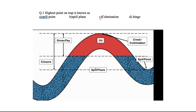The lowest point is called the Spill Plane, and on this Spill Plane we have the Spill Point. The line joining the Spill Points is called the Spill Plane. In an anticlinal trap, the region where we have economical deposits is called the Closure Plane, and the distance between the Culmination Plane and Spill Plane is called Closure. So the right answer is Culmination.